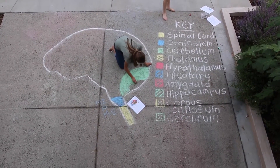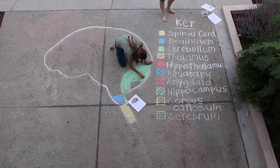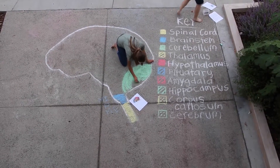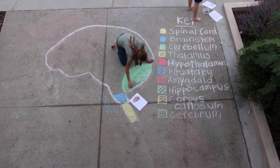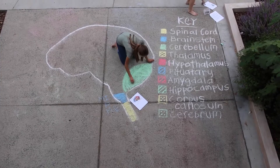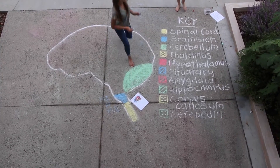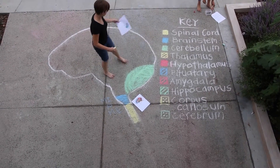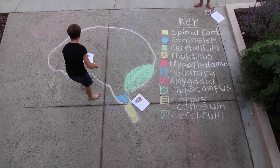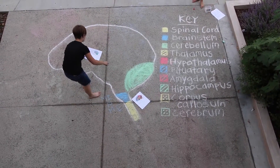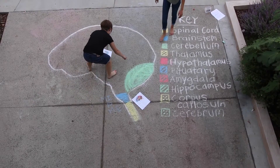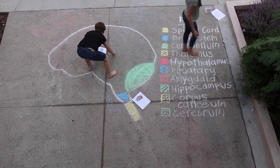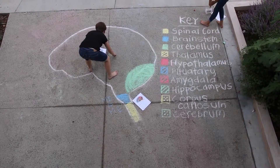Next is the thalamus. It is located in the forebrain and is the brain's sensory control center. It is responsible for sorting data and determining where that data goes. It directs messages to the sensory receiving areas in the cortex and transmits replies to the cerebellum and medulla.